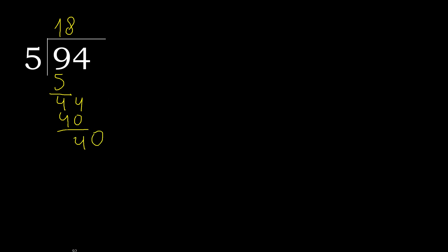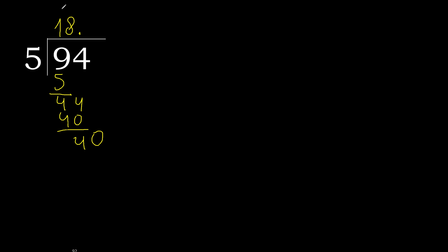Always complete with 0. 40: 5 multiplied by 8 is 40 — exact, not greater. 40 minus 40 is 0. Remainder is 0, therefore finish.